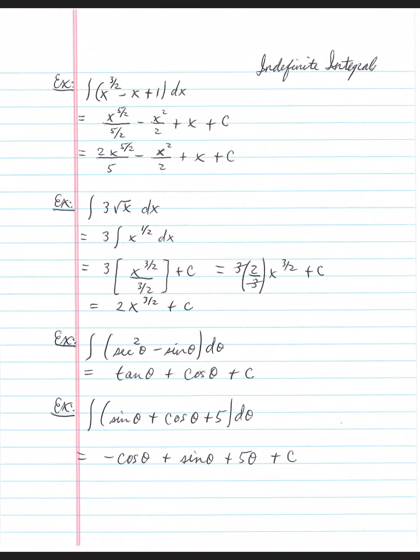Dividing by 5 halves is the same as multiplying by 2 fifths. So a cleaner answer would be 2 fifths x to the 5 halves minus x squared over 2 plus x plus c.